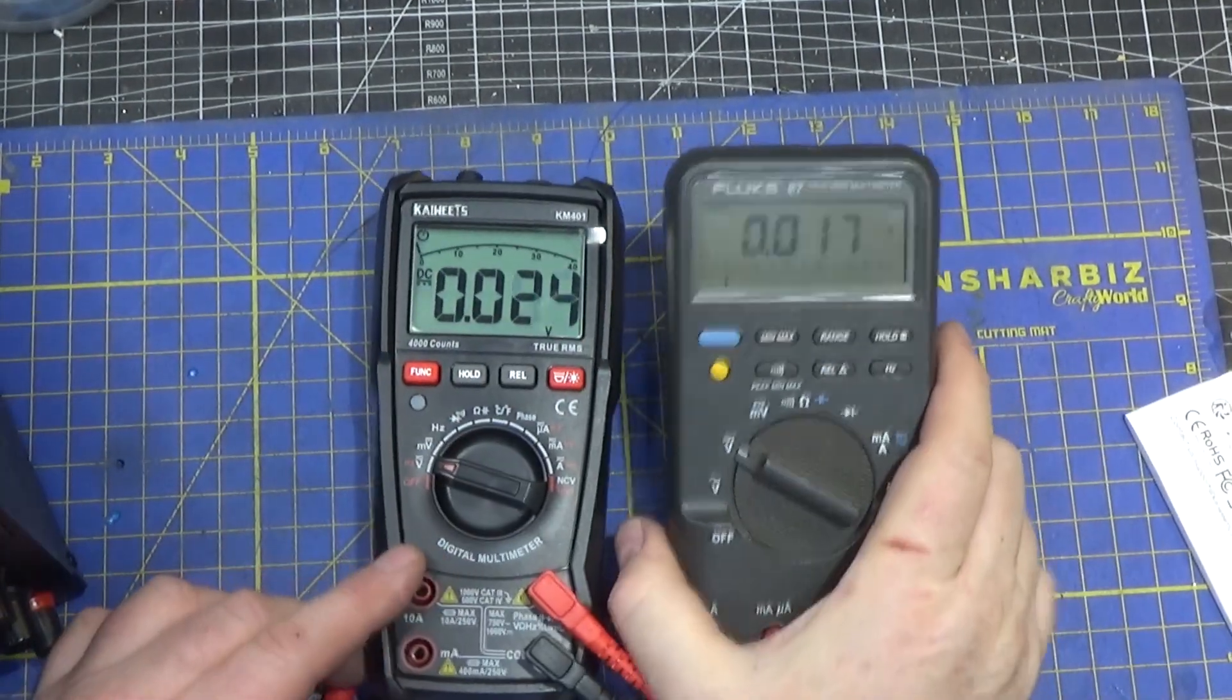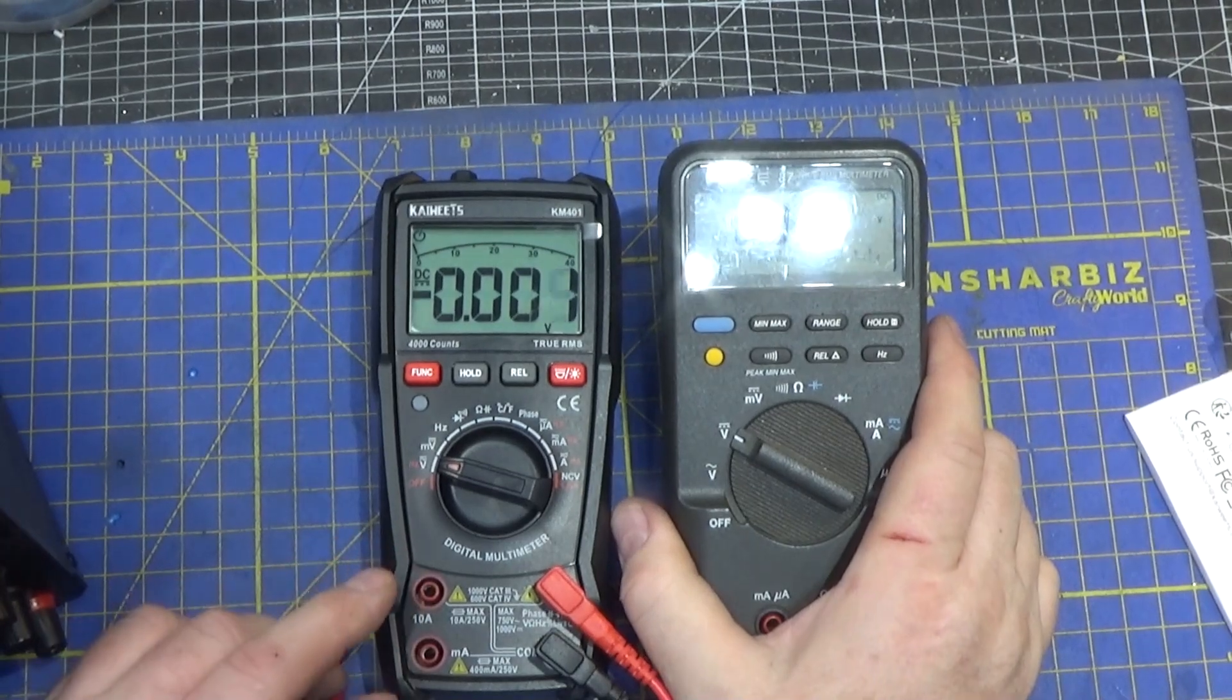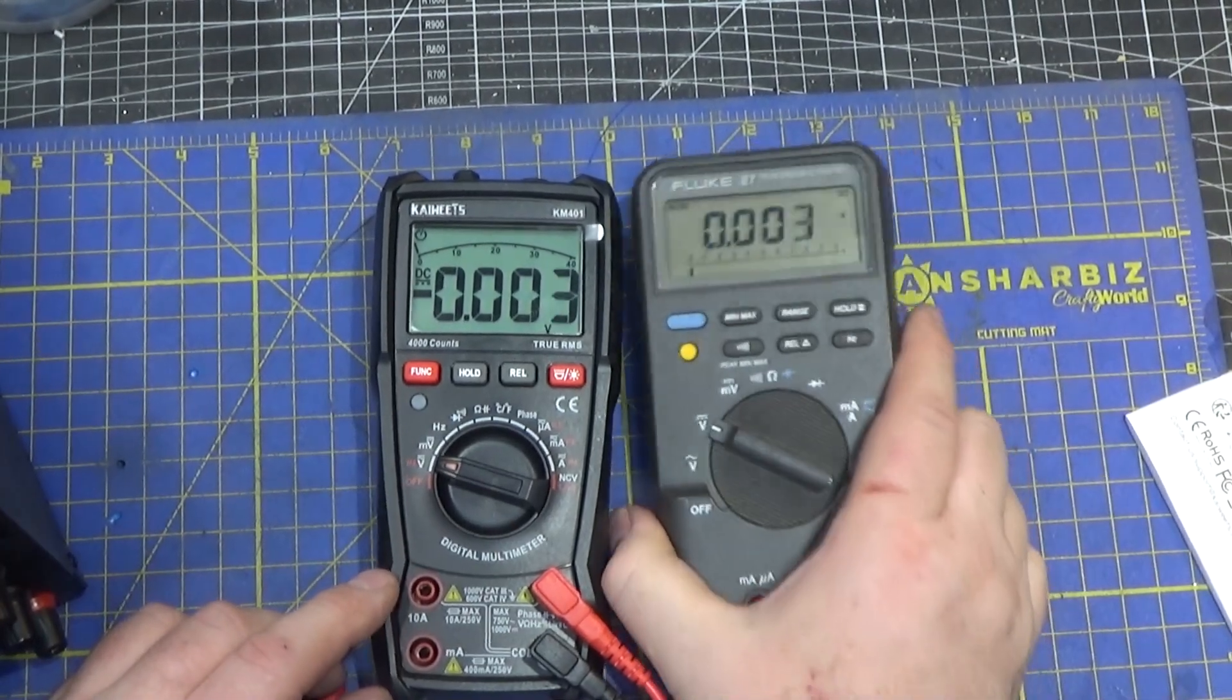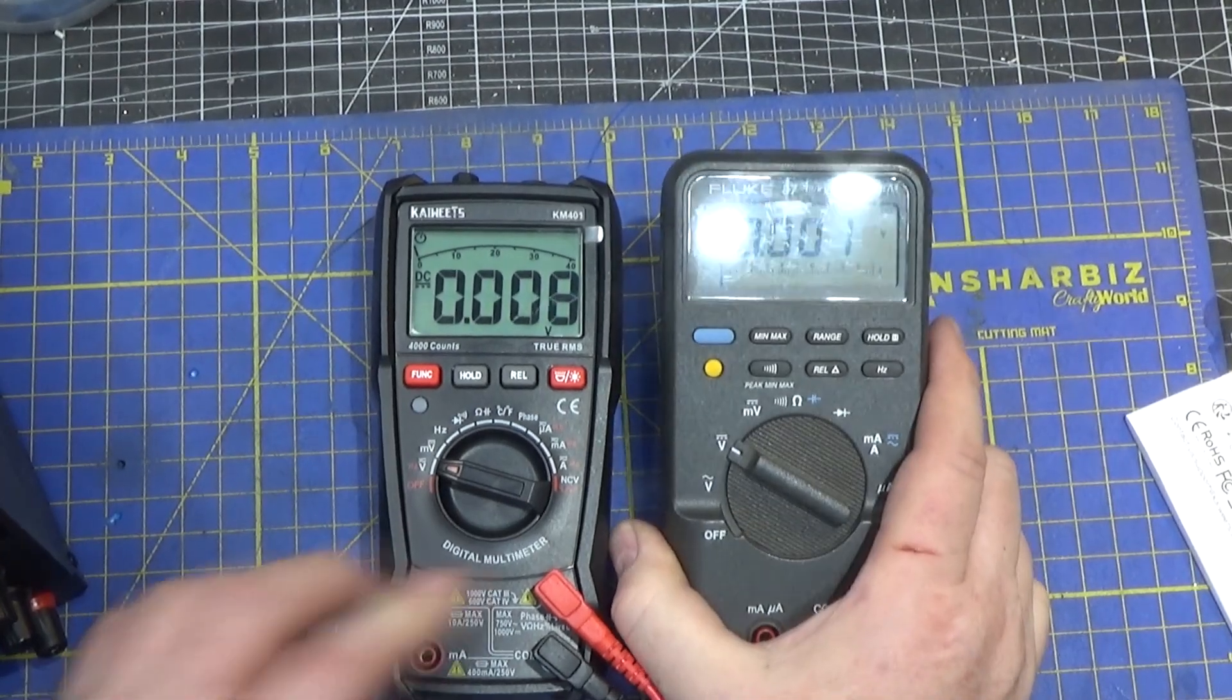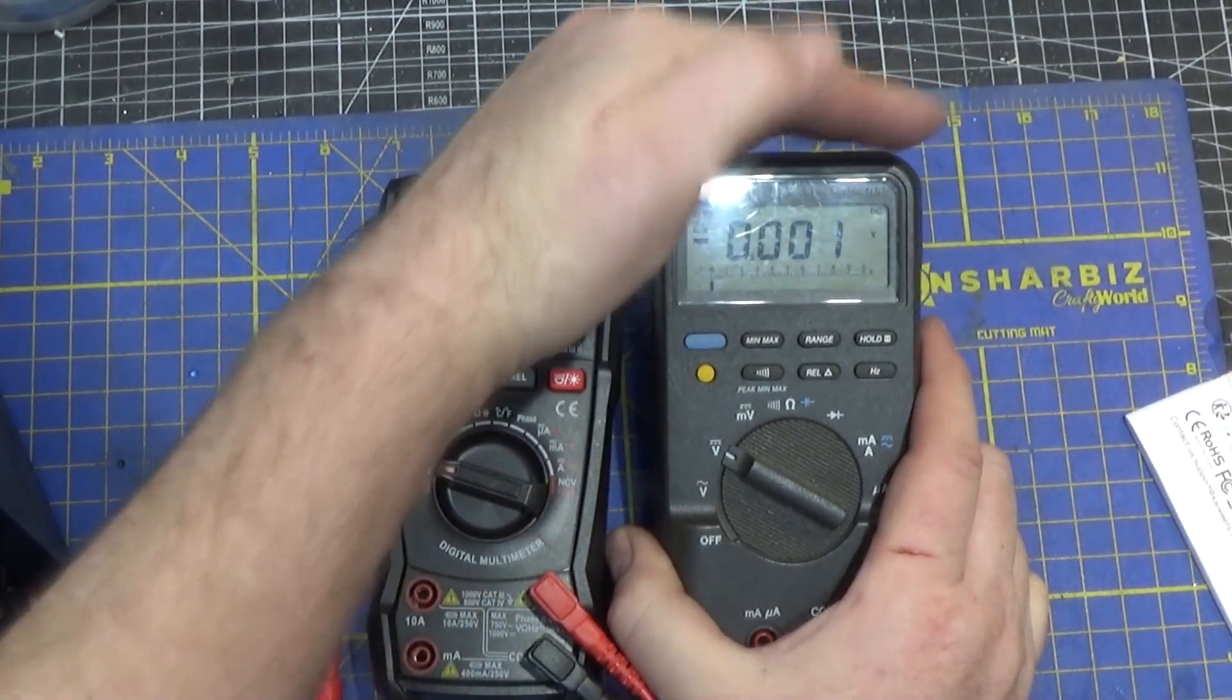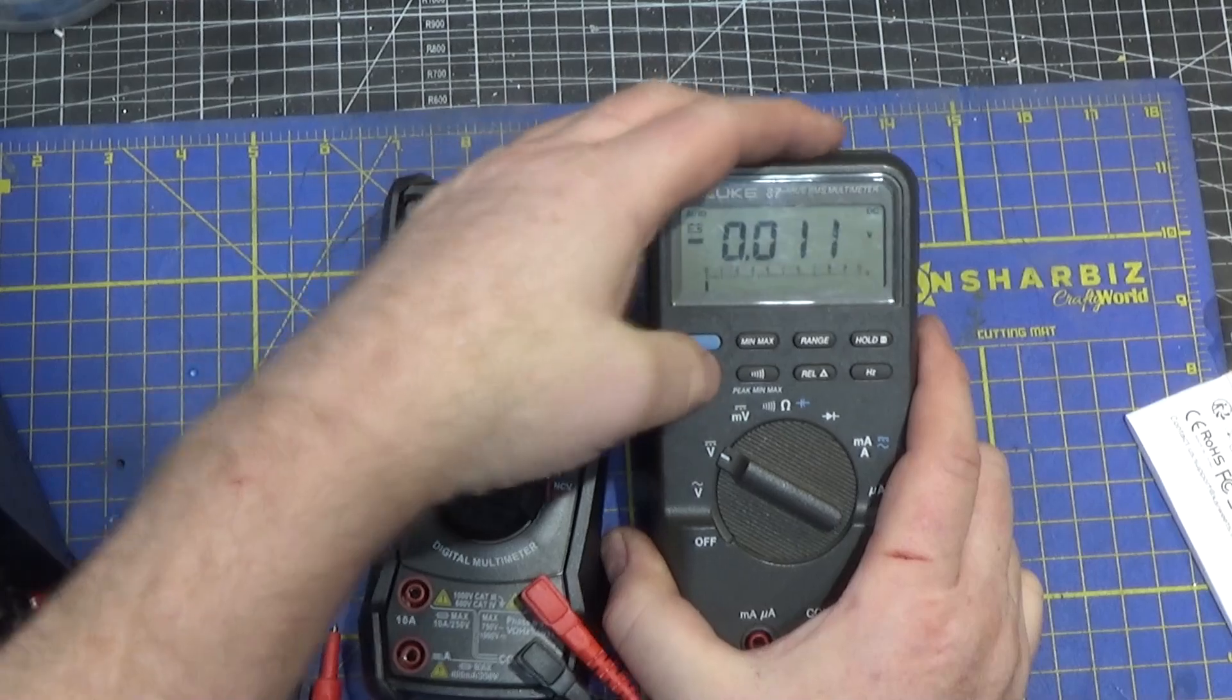Here's the side by side with the Fluke 87, a probably 10 times more expensive multimeter and you can see the display kicks the Fluke's butt. The backlight on the Fluke is also not super bright.